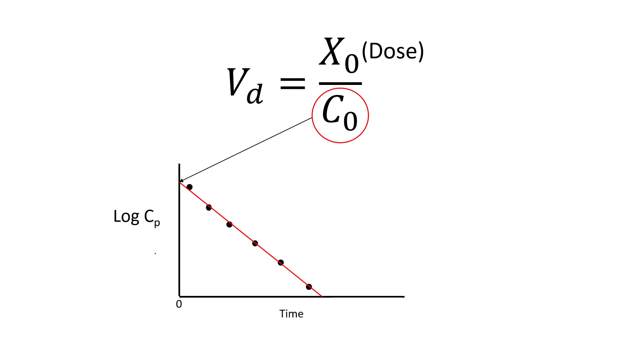And then we can plot that on the log concentration versus time scale. Fit a line to it, and we can track that all the way back to time zero, and we can find a theoretical concentration at time zero if this drug instantaneously distributed throughout the body. And then we can use that. We know the dose, we can have this theoretical concentration at time zero, and we can figure out the apparent volume of distribution. We can figure out what volume would explain that concentration.